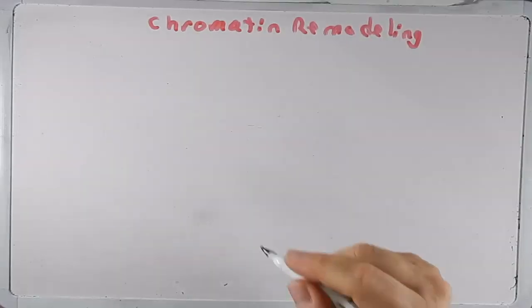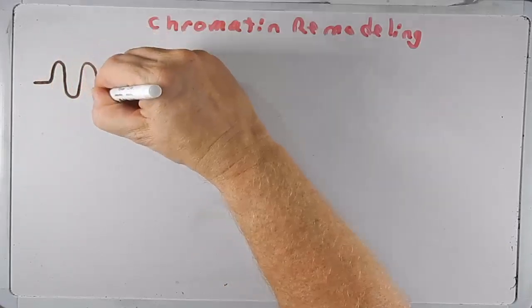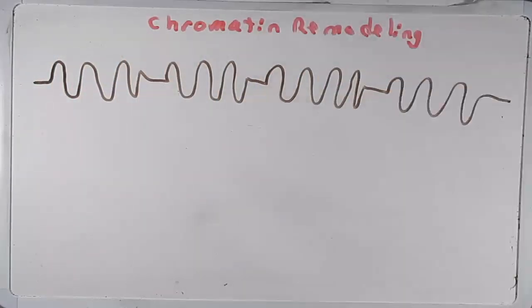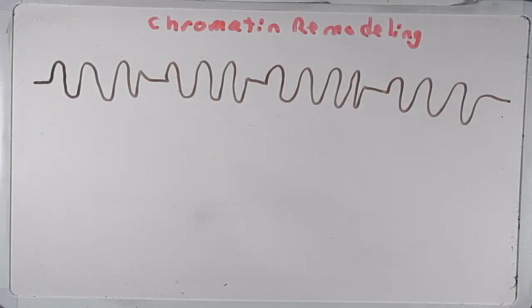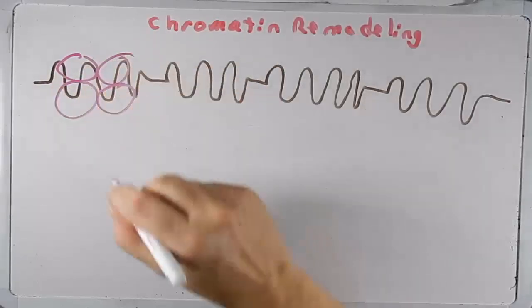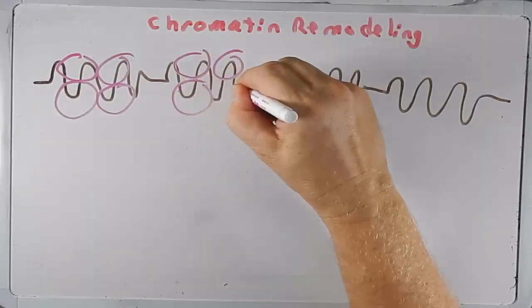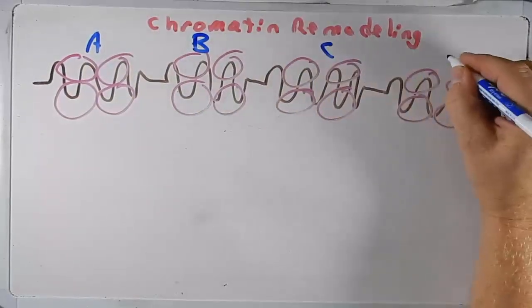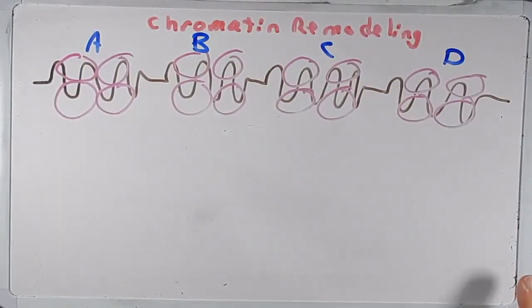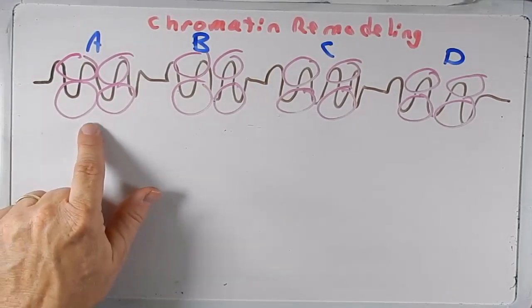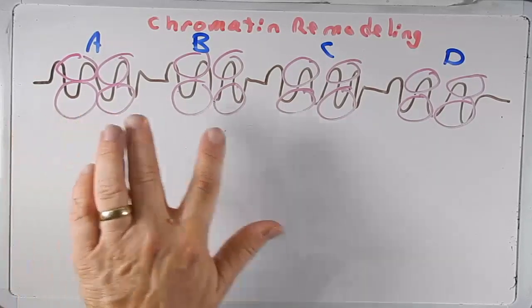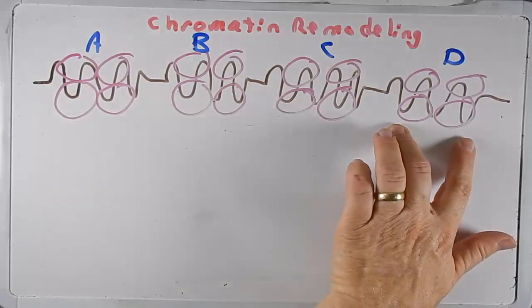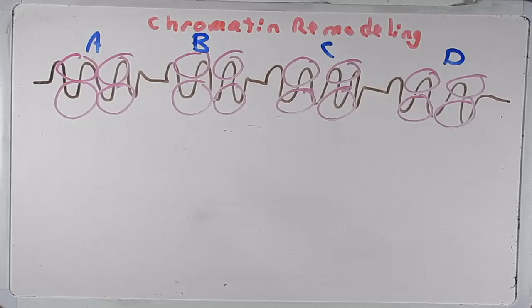A few chapters ago we talked about the nucleosome. The nucleosome has DNA with histone proteins attached to them — there are eight histones that make up a nucleosome, but I'm just drawing four. For our example, let's call the regions gene A, gene B, gene C, and gene D. I'm greatly oversimplifying: a single gene would have many nucleosomes attached to it, but usually there are many nucleosomes per gene.